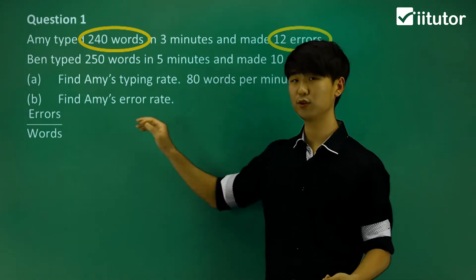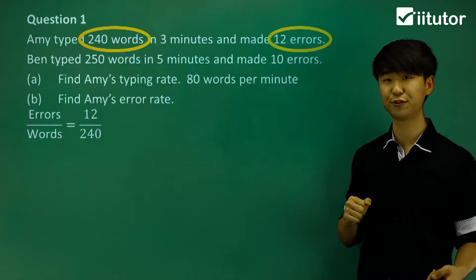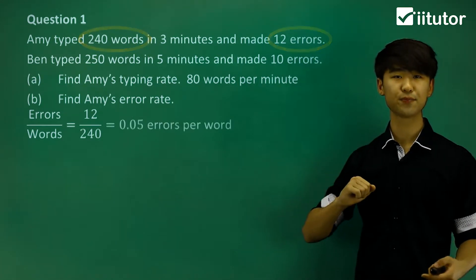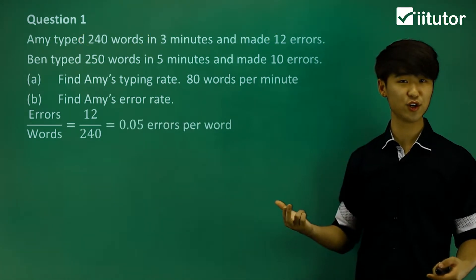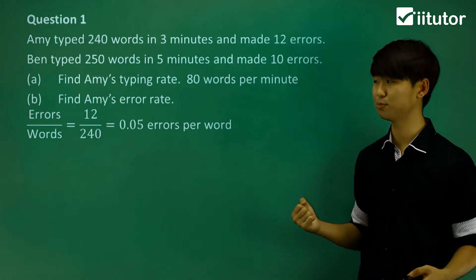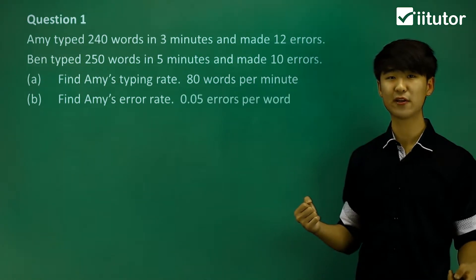To find that rate, we're going to do 12 divided by 240. Calculate it, we get a rate of 0.05 errors per word. Let's leave that up there.